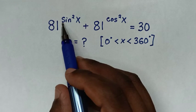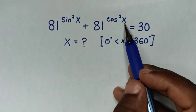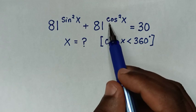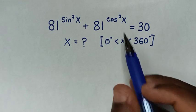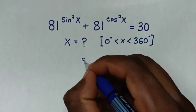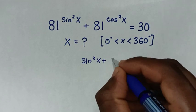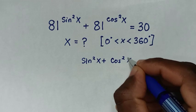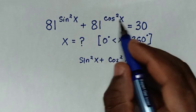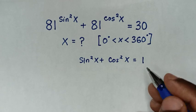From the powers sin²x and cos²x, we will apply a trigonometric rule, which is sin²x + cos²x = 1. Then we make cos²x the subject, so sin²x will move to the other side.